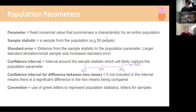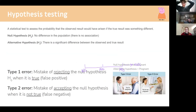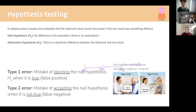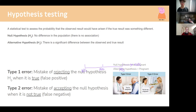For hypothesis testing, the null hypothesis states that there is no association. For example, if the hypothesis is that smokers are more likely to get lung cancer, the null hypothesis is that smoking is not associated with lung cancer. At the end of an experiment, you either accept the alternative hypothesis or the null hypothesis.